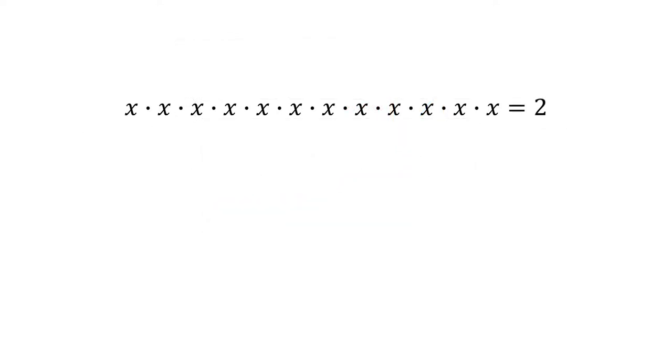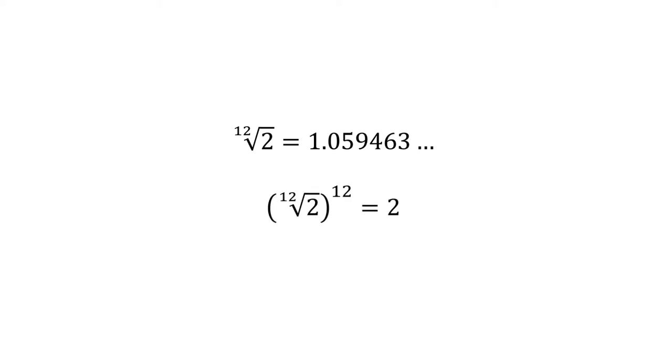If we had a linear system, we would achieve this with divisions and sums. However, an exponential system increases based on multiplications, so we have to use roots. Let's see, we have to find a number that multiplied 12 times gives us 2. Then, of course, that number would be the 12th root of 2. If we calculate this number, it would be equal to 1.059463. There are more decimal digits, but here I am truncating it. It may look like an awkward number, but the elegant thing is that this number multiplied 12 times gives us exactly 2. Well, that's without truncating decimals.